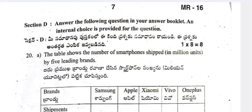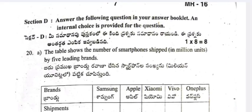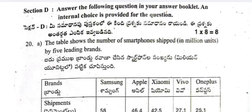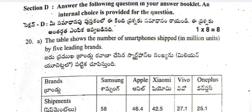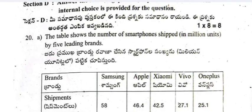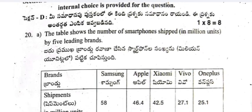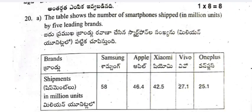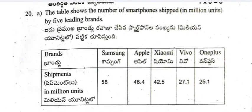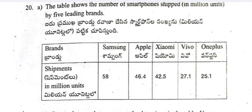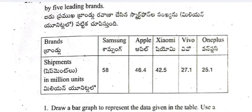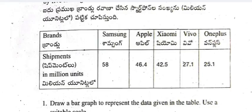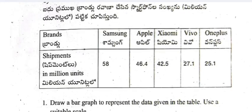Section D — Answer the following essay-type questions. Internal choice is given. Question 20: The table shows the number of smartphones shipped in million units by five leading brands — Vivo, Samsung, Apple, Xiaomi, and OnePlus.